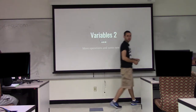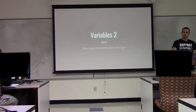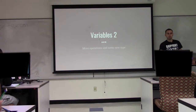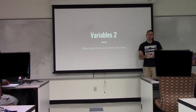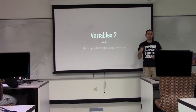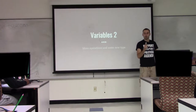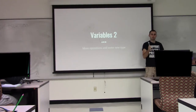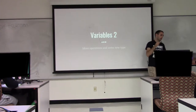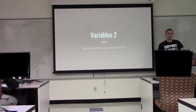We are going to continue with variables today. We're going to look at some more types. So far we've seen two types — can anyone tell me what one of those is? Integer, int. There's another one: string. Scanner is the third type we've looked at, but int and string are the only ones we've really studied — how they work and what you can do with them.